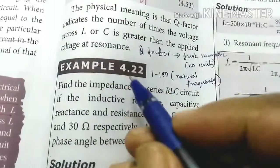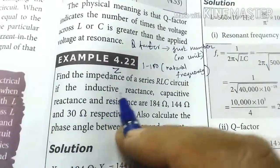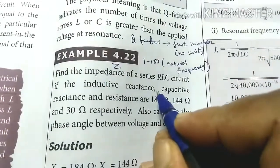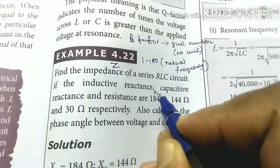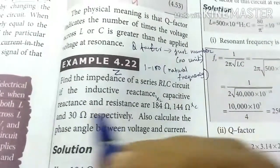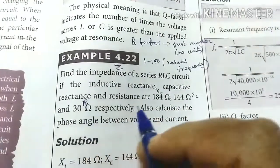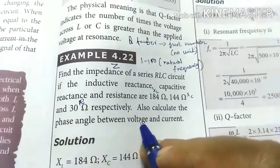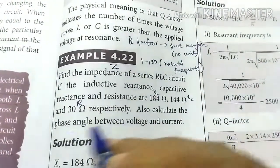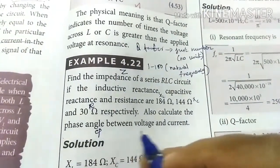Impedance, that is Z. And given here inductive reactance, inductive reactance that is XL. Capacitive reactance XC. And resistance R. Also calculate the phase angle between voltage and current.